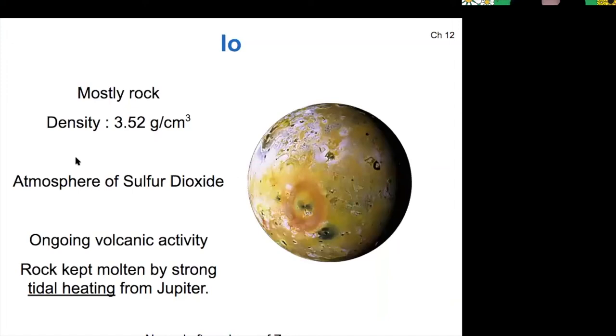I want to take a closer look at Io. Io is a mostly rocky body, so it has a higher density than Oberon or Titania did, right? More rock instead of more ice.